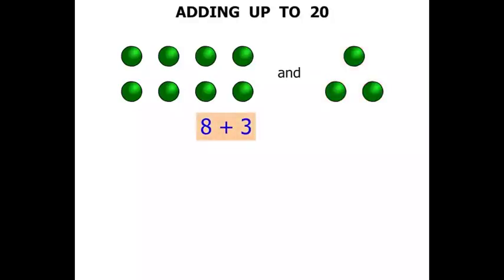Now 8 plus 3 means how much all together? Well let's count them all in one hit now. 1, 2, 3, 4, 5, 6, 7, 8, 9, 10, 11. So we write that it equals 11. 8 plus 3 equals 11.